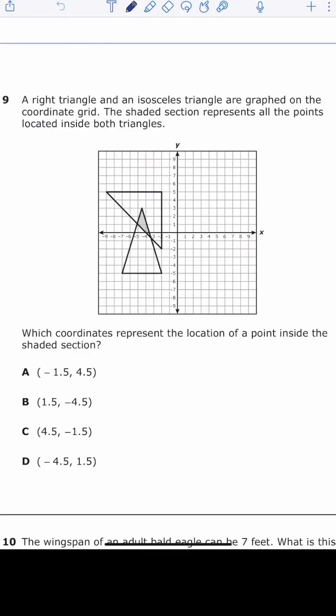This is number nine from the 2022 sixth grade math star test. A right triangle and an isosceles triangle are graphed on the coordinate grid. The shaded section represents all the points located inside both triangles. Which coordinates represent the location of a point inside the shaded section?